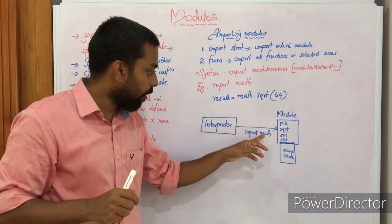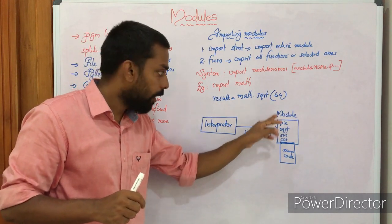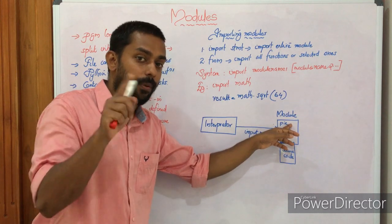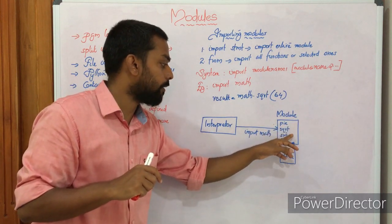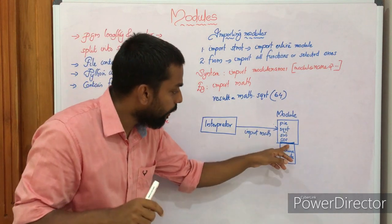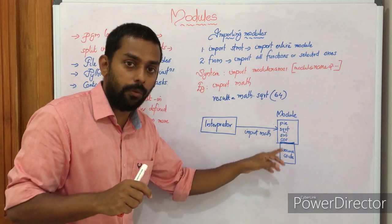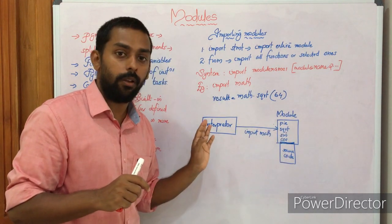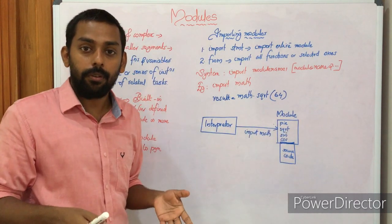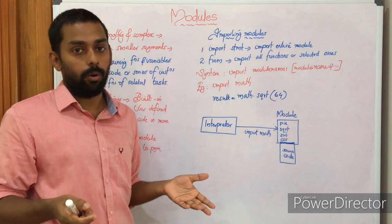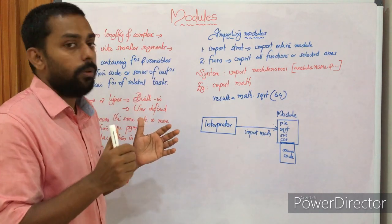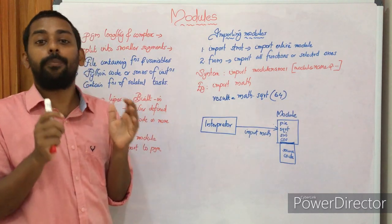Let's see a graphical representation. The interpreter imports the math module. Here is our math module, and you can see a number of functions defined in it: pi, sqrt, sine, cos, log — a number of functions. Here is our source code, and after importing math, it became part of our source code. We can access all the functions. This is how modules in Python work.